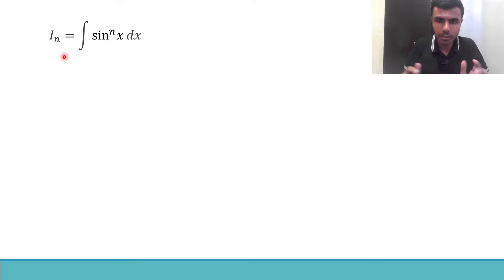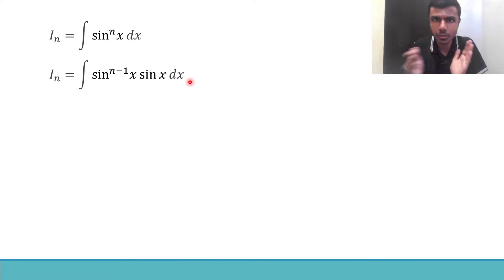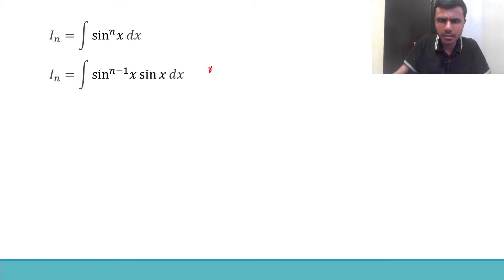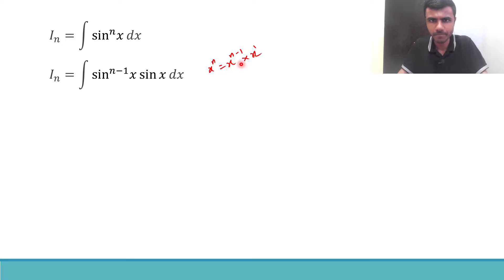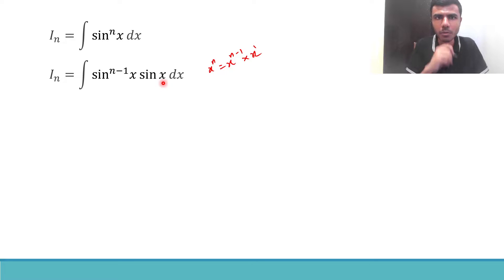Next, what I'm going to do is write sin^n x as sin^(n-1) x · sin x. This is totally fine — just like x^n can be written as x^(n-1) · x^1, likewise sin^n x can be written as sin^(n-1) x · sin x.